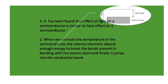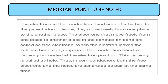It has been found that the effect of light on a semiconductor is similar to the heat effect on a semiconductor. When we increase the temperature of the semiconductor, the valence electrons absorb enough energy to break the bonds with the parent atom and finally jump into the conduction band, which is the unfilled band. Electrons in the conduction band are not attached to the parent atom, so they move freely from one place to another.